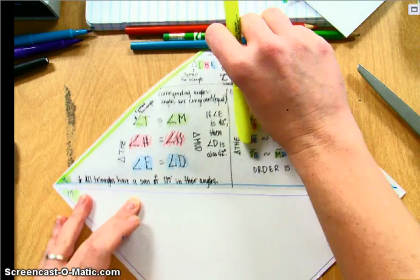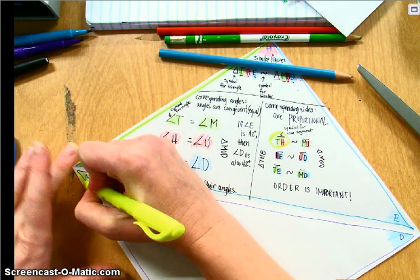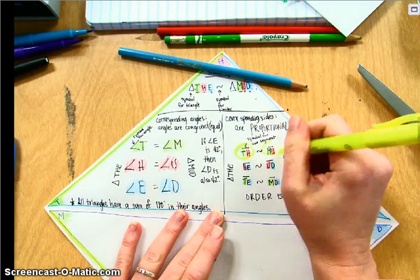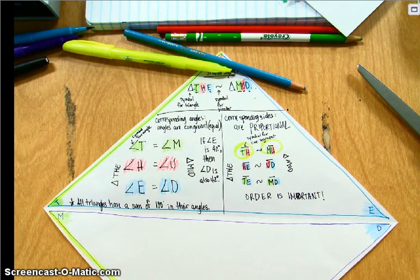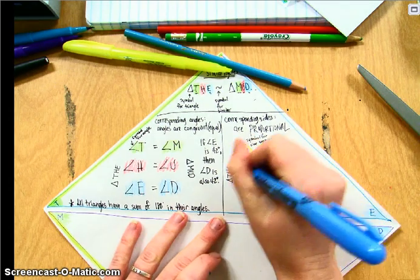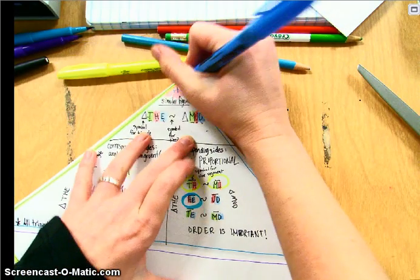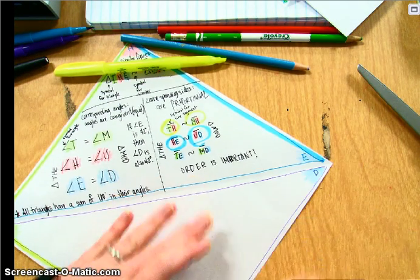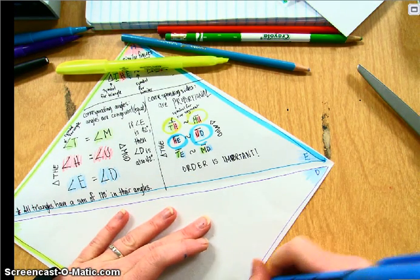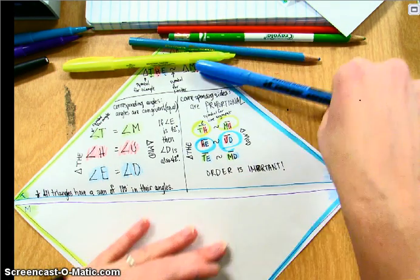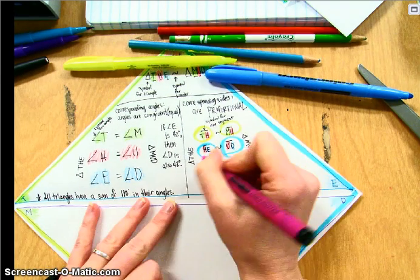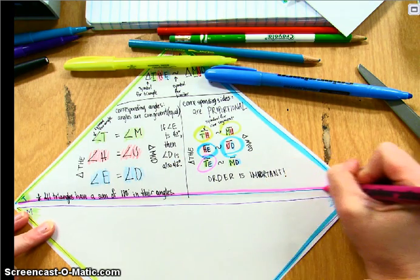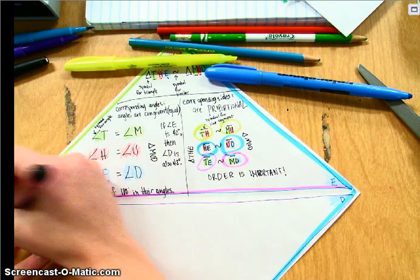Line segment HE corresponds with line segment UD. Line segment TE corresponds with line segment MD.